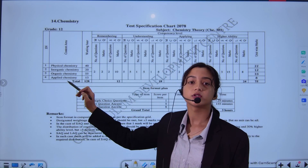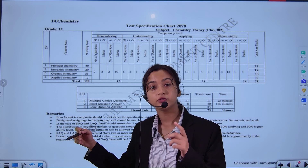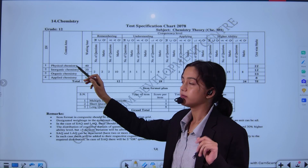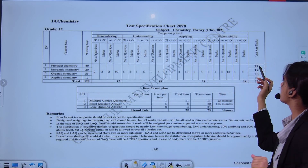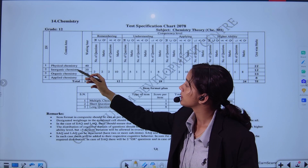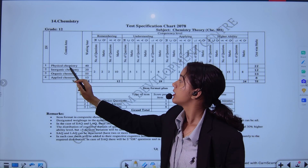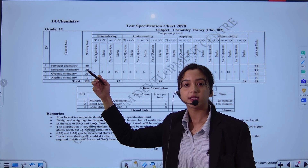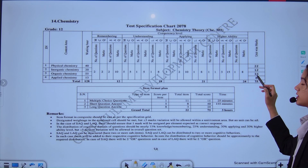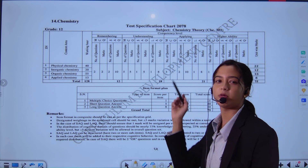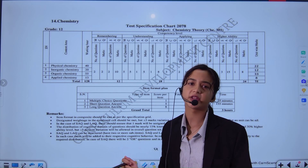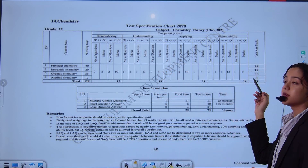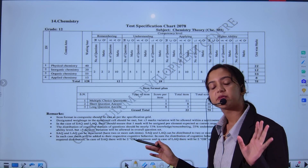Applied is a long question, fixed marks. Physical chemistry is numerical-based and is worth 20 marks. Inorganic is worth a certain marks. Organic is long-term — 33 marks. Pass mark is 27. Now if you want to pass, you can pass.